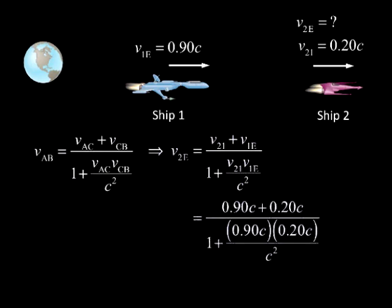This is equal to 0.90c plus 0.20c divided by 1 plus 0.90c times 0.20c divided by C squared. This is equal to 0.93c, which is equal to V2e. This value no longer violates the idea that the speed of light in vacuum is the upper limit.